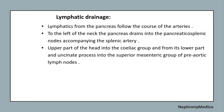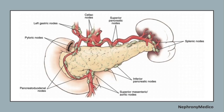Regarding lymphatic drainage: the lymphatics from the pancreas follow the course of the arteries. To the left of the neck, the pancreas drains into the pancreaticoduodenal nodes accompanying the splenic artery. The upper part of the head drains into the celiac group, and from its lower part and uncinate process into the superior mesenteric group of pre-aortic lymph nodes. This picture shows the lymphatic drainage of the pancreas.